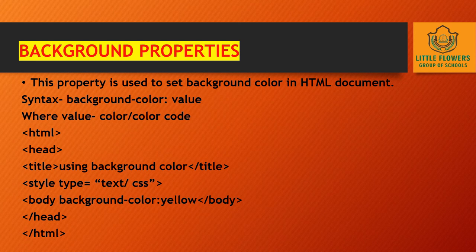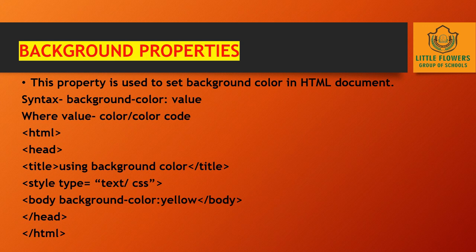For internal CSS, you write the style within the style tags in the head section. For external CSS, you create a separate CSS file and link it to your HTML to design the page. The background-color property is used to set the background color in HTML. The syntax is: background-color colon value — where the value can be a color name or a color code.